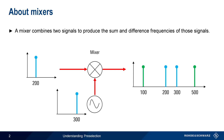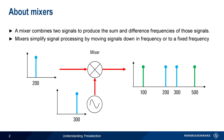The reason that mixers are used to translate signals in frequency is for ease of processing. Higher frequency RF signals are almost always more challenging to work with than lower frequency signals. By using mixers, we can convert input signals over a wide frequency range to a single frequency, and then process those signals with fixed filters or amplifiers with fixed bandwidths.